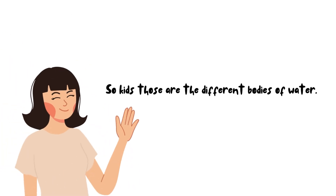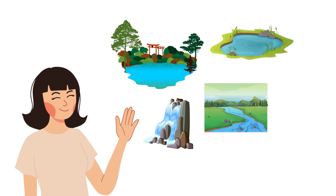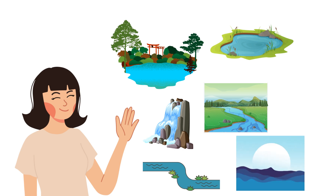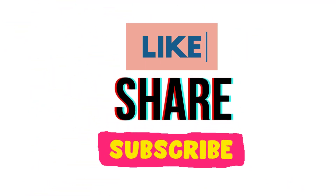So kids, those are the different types of bodies of water. Whether it's a lake, a pond, a waterfall, a river, a stream, or the ocean, each one has its own unique features and wonders to discover. If you liked the video, like, share, and subscribe. Until next time, thank you for watching!